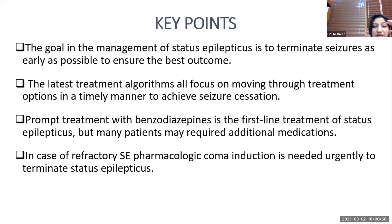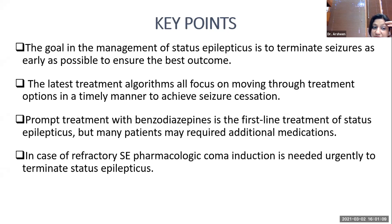Key points in management of status epilepticus: the goal is termination of seizures as early as possible to achieve the best outcome. The latest treatment algorithms focus on moving through treatment options in a timely manner to achieve seizure resolution. Prompt treatment with benzodiazepines is the first-line treatment for all status epilepticus, but patients may require additional medication in case of refractory status. Coma-inducing medications should be initiated as early as possible to terminate status epilepticus.